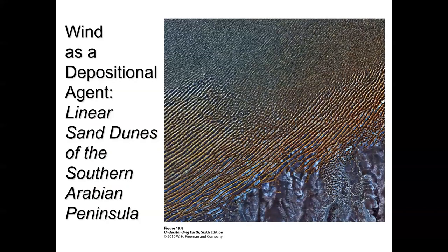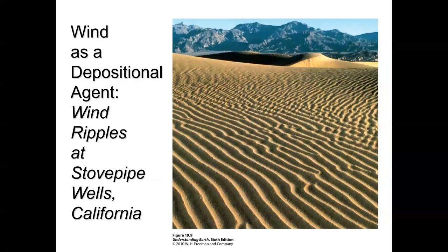Wind also leaves lots of dunes in some deserts, taking up sand and leaving them in features that have all sorts of different shapes, somewhat similar to ripples you might see on the bottoms of streams — except these are shaped by wind, not water. You can also see wind ripples that are essentially dunes on top of dunes, shaped by wind as well.